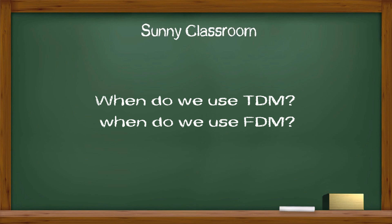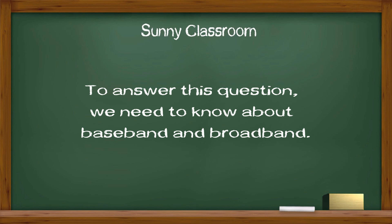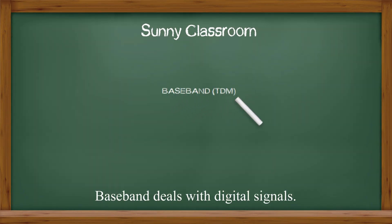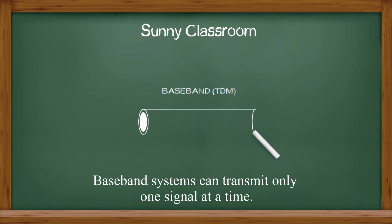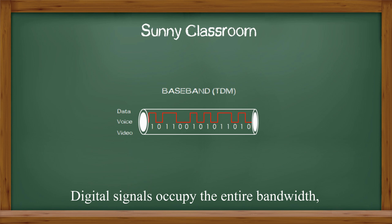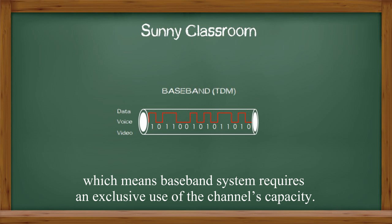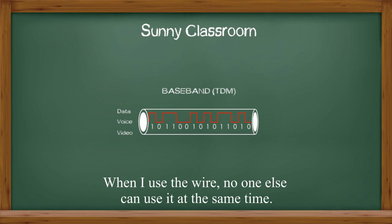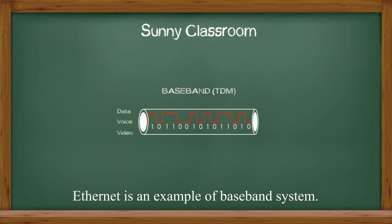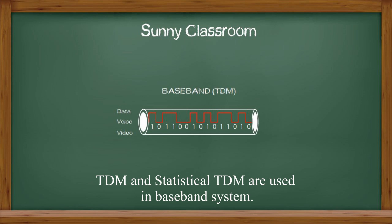You may ask: when do we use TDM and when do we use FDM? To answer this question, we need to know about baseband and broadband. Baseband deals with digital signals. Baseband systems can transmit only one signal at a time — digital signals occupy the entire bandwidth, which means baseband systems require exclusive use of the channel's capacity. When I use a wire, no one else can use it at the same time. Ethernet is an example of a baseband system. TDM and statistical TDM are used in baseband systems.